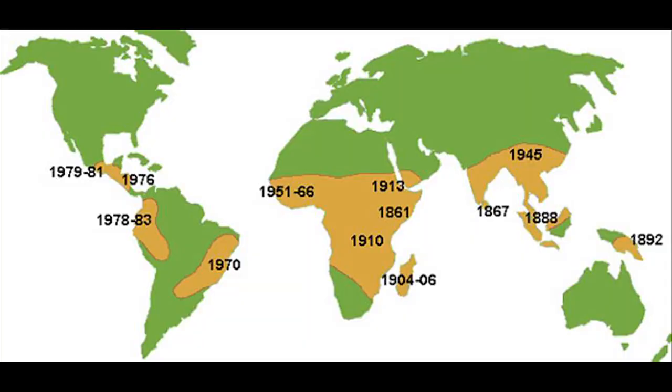Coffee rust has been around for a long time. This map shows when it arrived in various parts of the world. That is also fairly common among plants — there are times in the cultivation of a crop when it actually manages to sort of escape one of its pests. But frequently, the pest catches up.